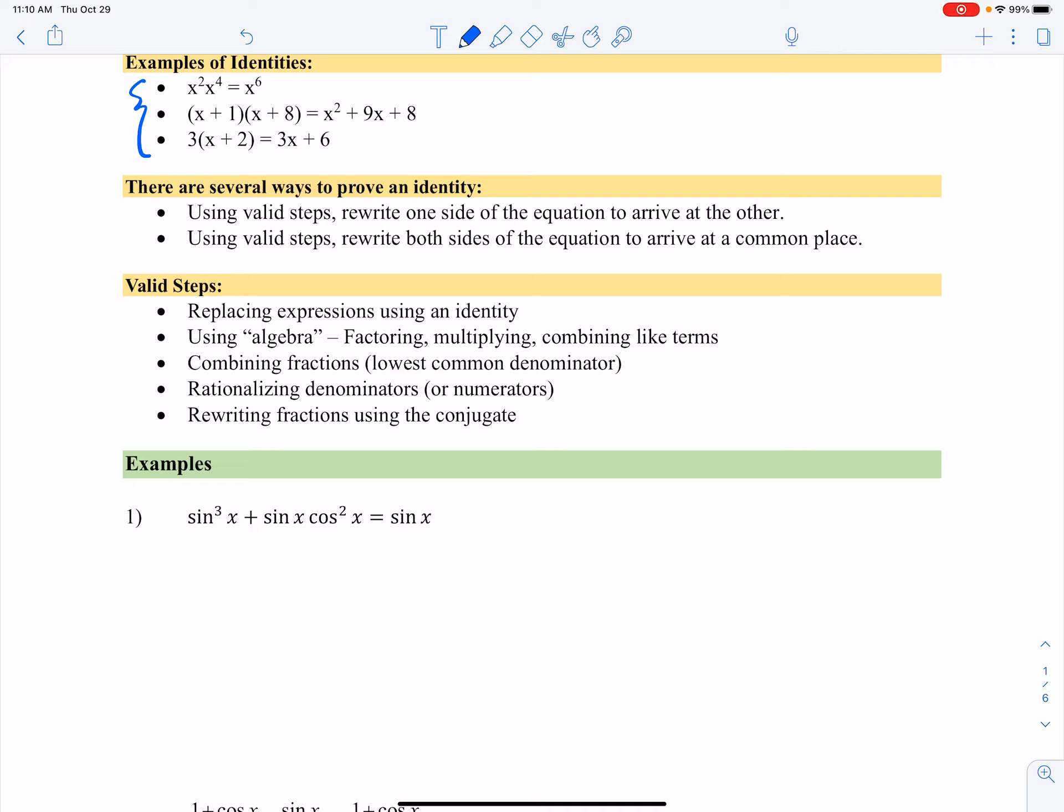Note that one thing we are never allowed to do is multiply both sides of an equation by a variable. The reason is we want to make sure we never multiply by zero, because multiplying two equations by zero doesn't do anything for us. So instead of multiplying by a common denominator, we would simplify the fraction as best as we can.